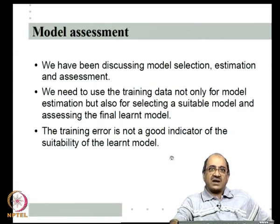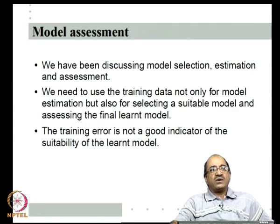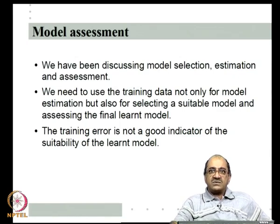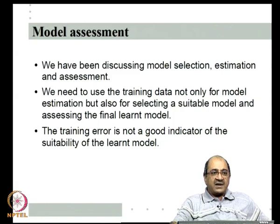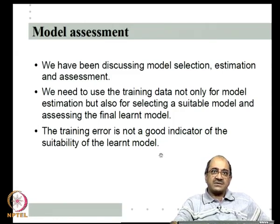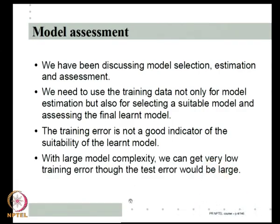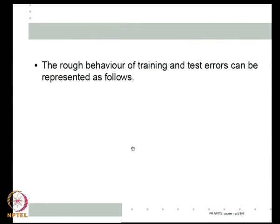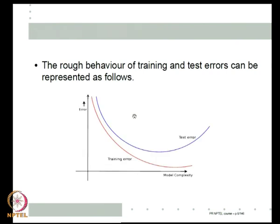All our algorithms are designed to minimize the training error. So whatever idiosyncrasies or noise is in our training data, our algorithms tune for that, and hence we may get very low training error but that does not necessarily mean we will do well on unseen patterns. When model complexity is large it is possible to get very low training error, but the test error on new unseen data would be large.